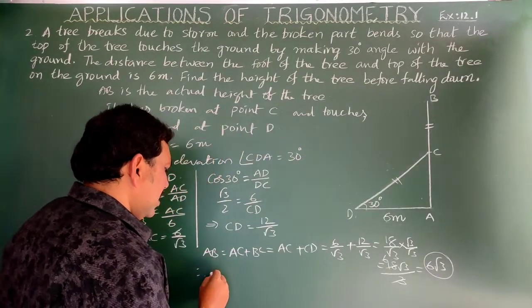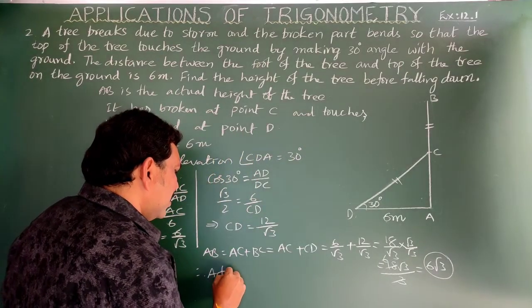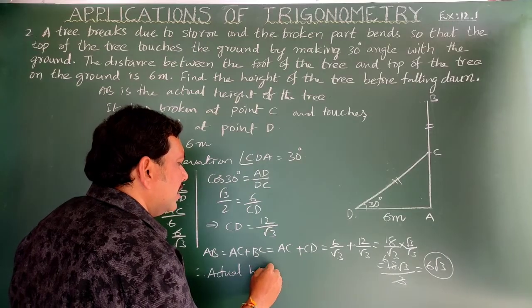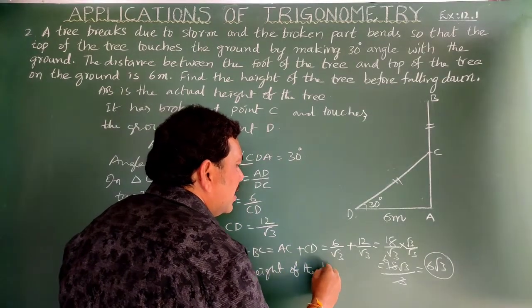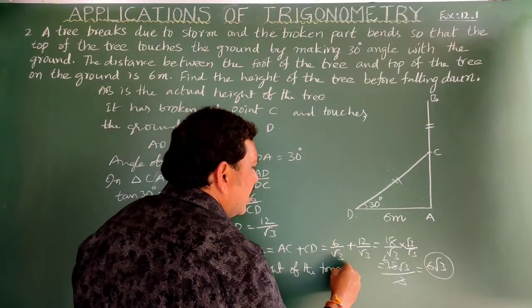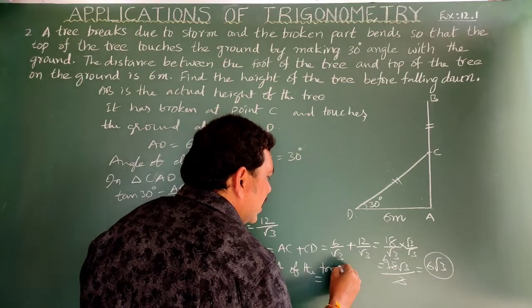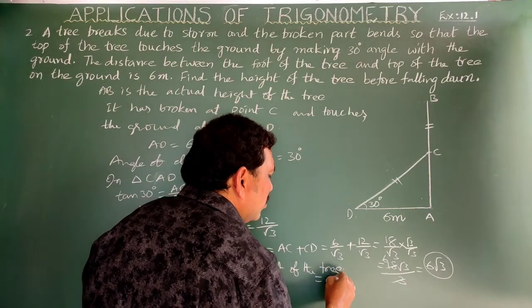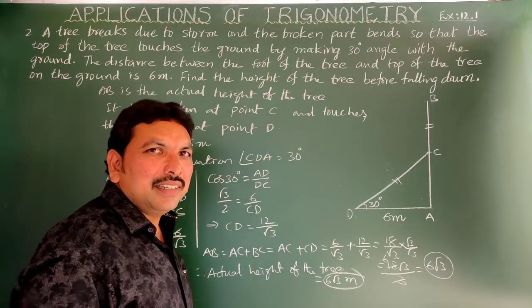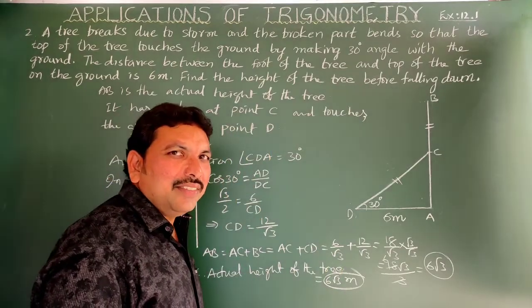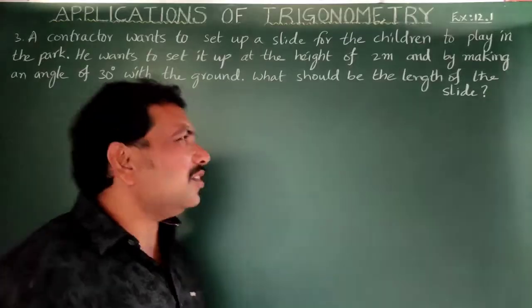Therefore, the actual height of the tree is 6√3 meters. Next, third question.